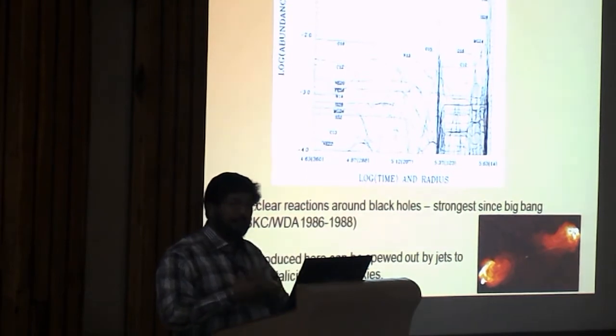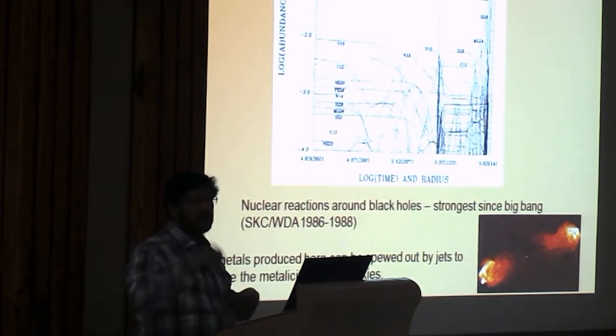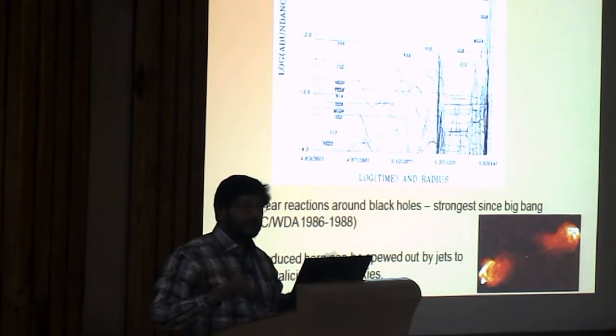So, you can burn matter, lot of matter, continuously and eject them in the form of jets. Maybe 50% of the matter goes out as jets. So, you can increase the metallicity of the galaxy in this process.